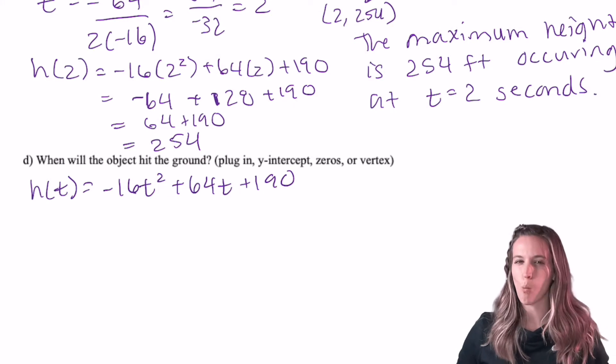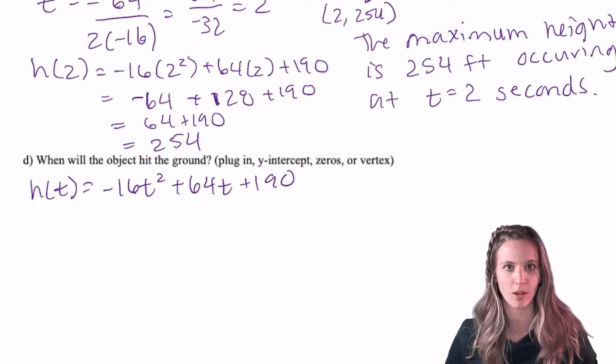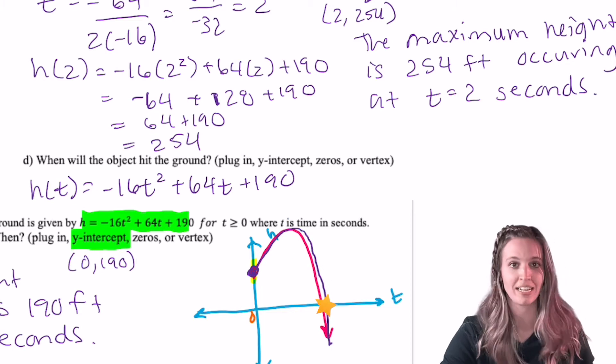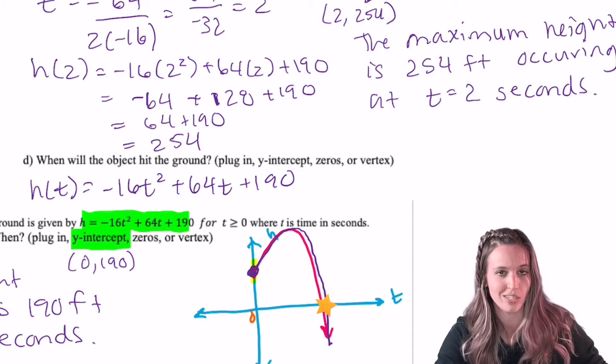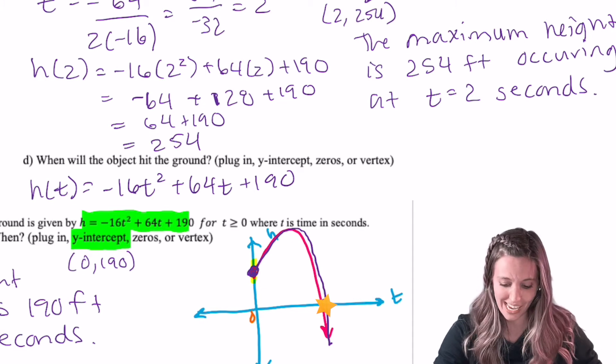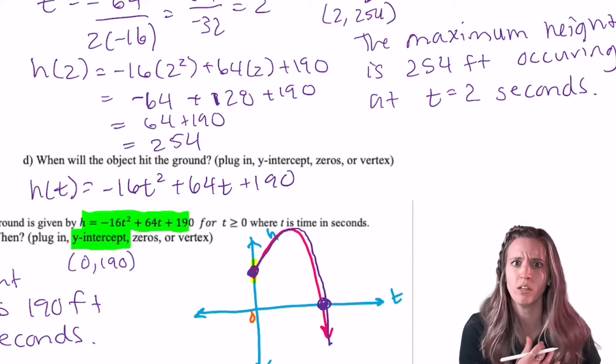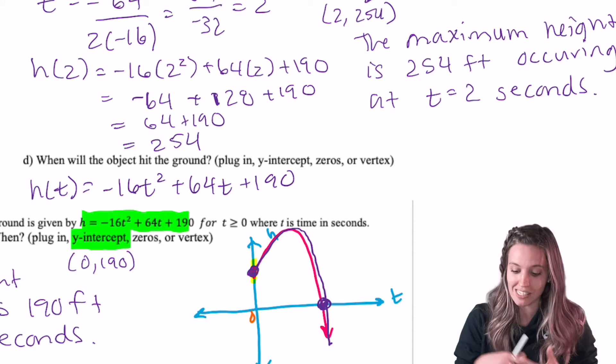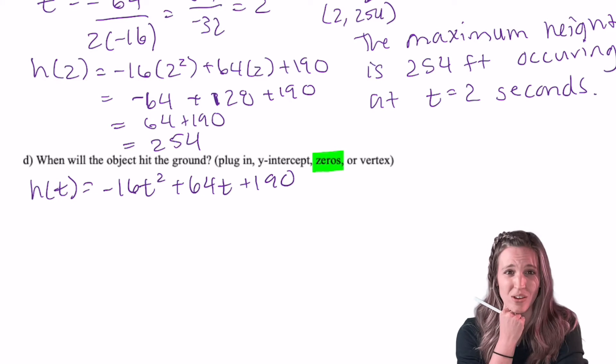Last question about this example. When does the object hit the ground? This might help to look at visually. I have my object starting at 190 feet up here, flying up, and then plummeting back down to the ground. So where do you think the ground is? Right here, right? What do we call those values? The x-intercepts. What else do we call those values? Solutions, roots, zeros. So this means this time I'm going to look for the zeros.